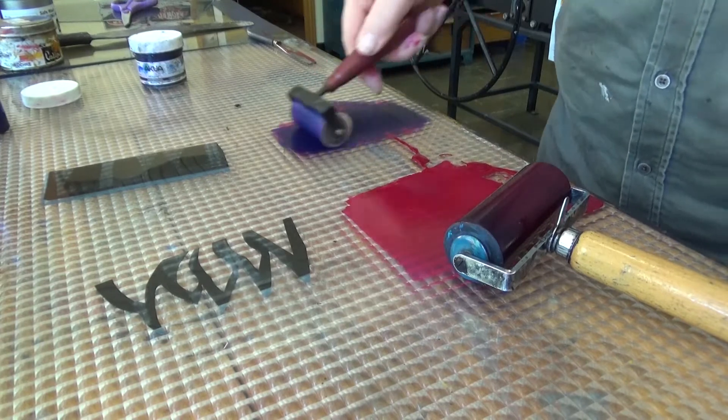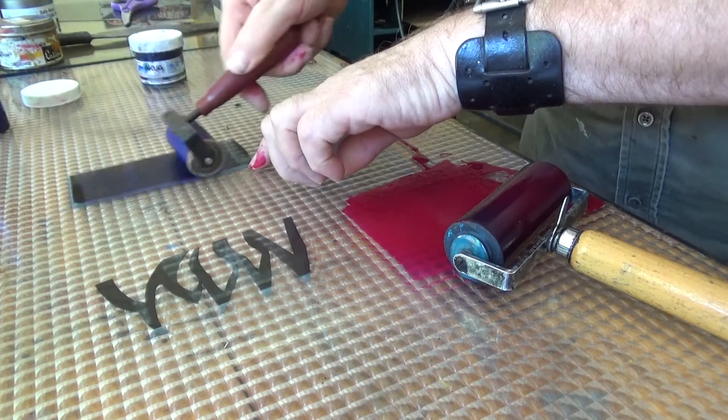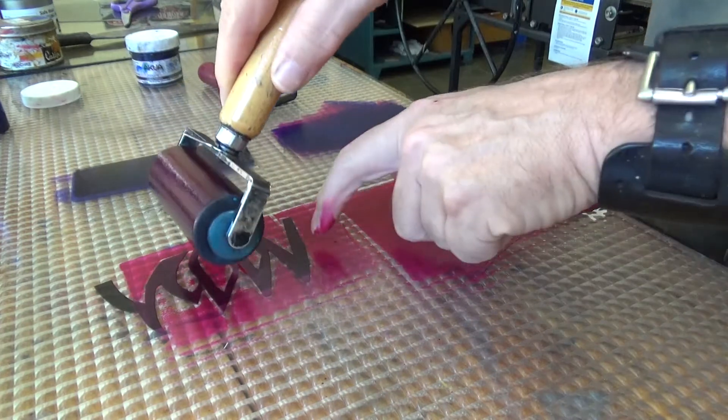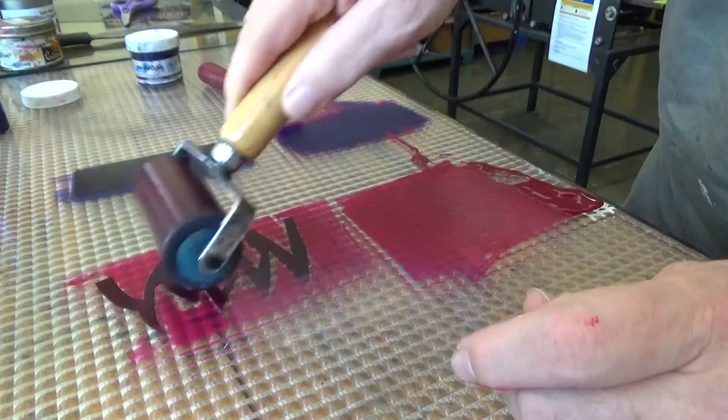So I ink up the main plate, the back brown plate if you like, doing that sort of bluey purple. And now with the magenta I'm going over the zig-zag bit. It's always a bit tricky to ink these bits up.